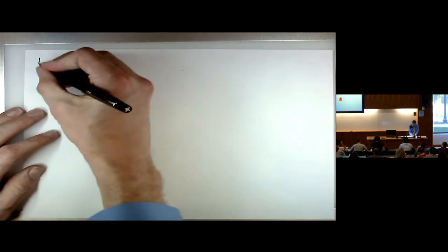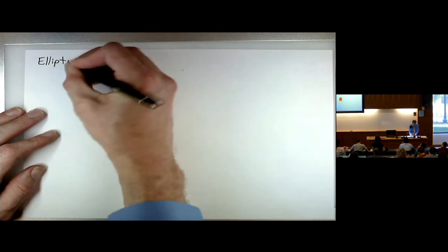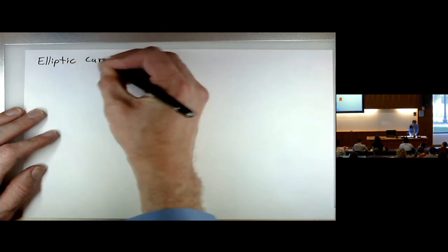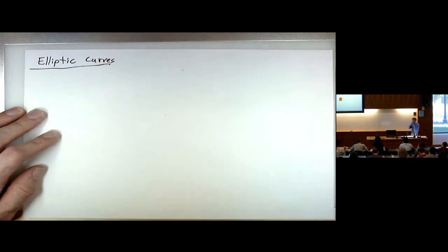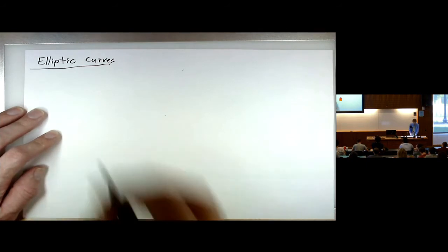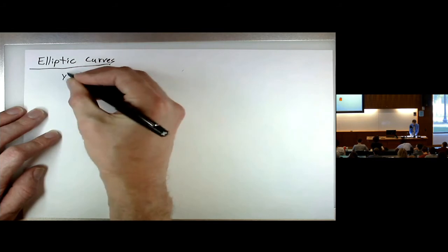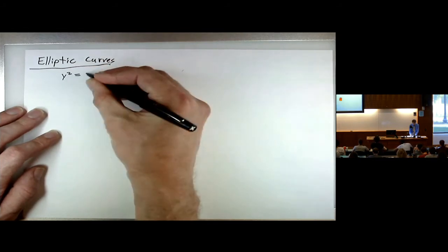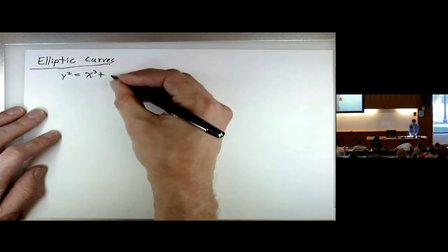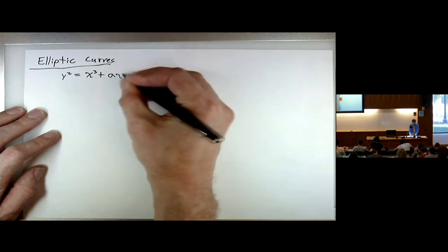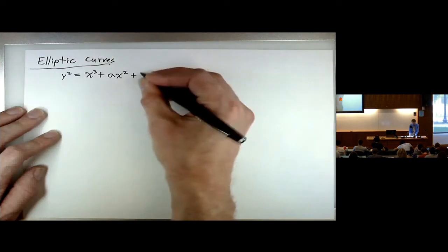So, elliptic curves. For the most part we're going to be dealing with many kinds of different equations, but the simplest classical examples of elliptic curves come from the form where you have y squared equal to a cubic polynomial.